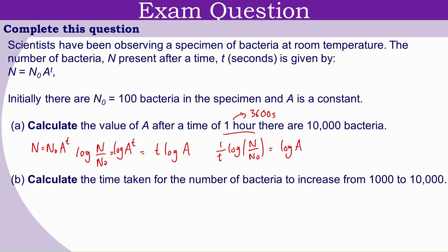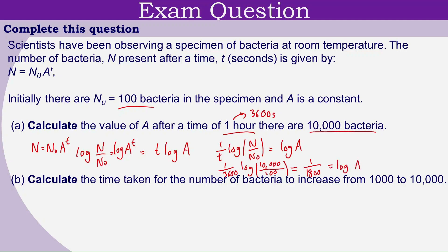Dividing both sides by t gives (1/t)·log(n/n₀) = log(a). Plugging in values: t = 3600 s, n = 10,000, n₀ = 100, this gives 1/1800 = log(a). Converting: a = 10^(1/1800), which from the calculator gives a = 1.0013.